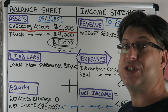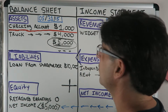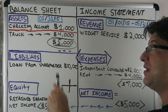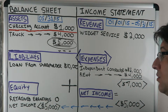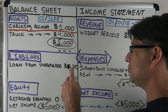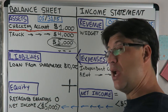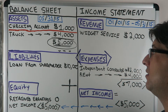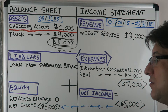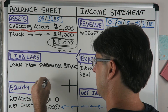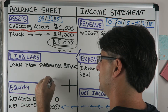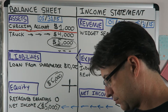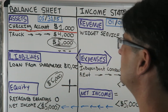The balance sheet: assets equal liabilities plus equity. Our assets — checking account is now one thousand dollars, plus our truck at four thousand dollars — equals five thousand dollars in assets. Liabilities didn't change: ten thousand dollars. Equity changed because net income changed: negative five thousand dollars. So ten thousand dollars minus five thousand dollars equals five thousand dollars for liabilities and equity. Five thousand equals five thousand — the balance sheet balances.